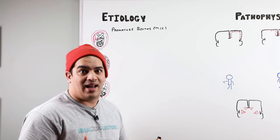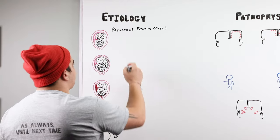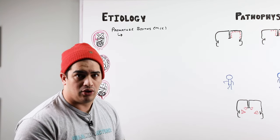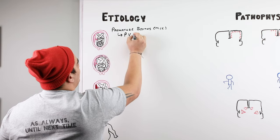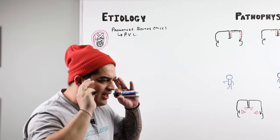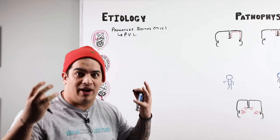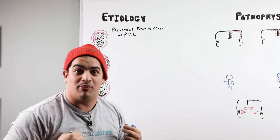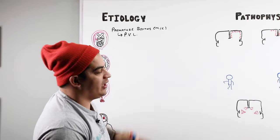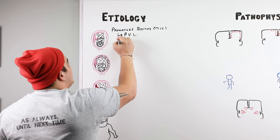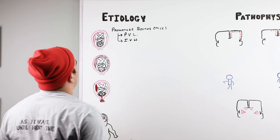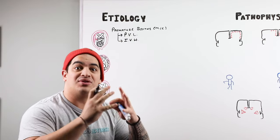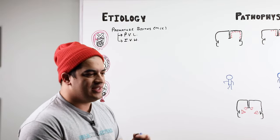With premature births, the brain isn't completely developed — it's not having the adequate time it needs. One of the most common things that results from premature births is a condition called periventricular leukomalacia (PVL). In PVL, there's an inadequate blood supply to the underdeveloped brain, and some of the tissue around the ventricles starts to die — specifically the white matter tracts descending from those upper motor neurons. The other condition is an isolated intraventricular hemorrhage, where small fragile capillaries near the ventricles can rupture, blood enters those ventricles, and this may even cause hydrocephalus.